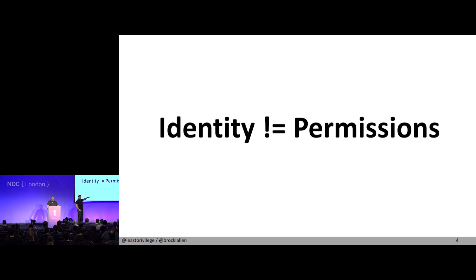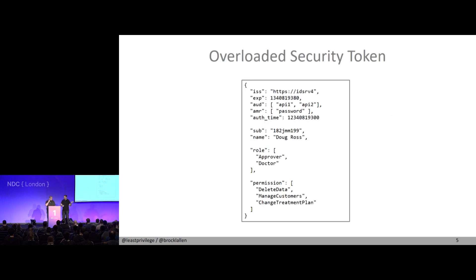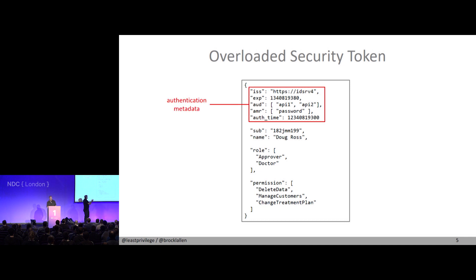Mixing up permissions and identity will get you in trouble, especially if your system is growing beyond what you initially planned for. Here's an example of how an identity token should not look: at the top we have authentication metadata — who is the issuer, when did the user authenticate, how did he authenticate, and the audience, meaning at which endpoints this token can be used.